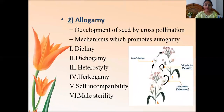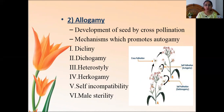The second process is allogamy. Just as autogamy is the development of seed through self-pollination, allogamy is the development of seed by cross-pollination. 'Allo' means different — the two plants involved have altogether different genetic constitutions.